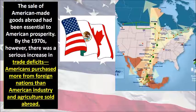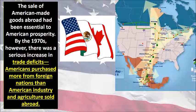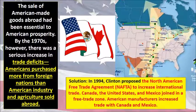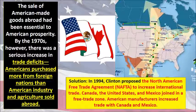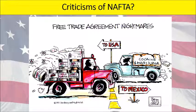Going into the 1990s, the sale of American-made goods abroad had been essential to American prosperity, but by the 1970s there was a serious increase in trade deficits — Americans were purchasing more from foreign nations than American industry and agriculture sold abroad. Clinton's solution in 1994 was NAFTA, the North American Free Trade Agreement, increasing international trade by joining Canada, the U.S., and Mexico in a free trade zone. American manufacturers increased trade with both Canada and Mexico, which is seen as a big accomplishment of Clinton's time in office.